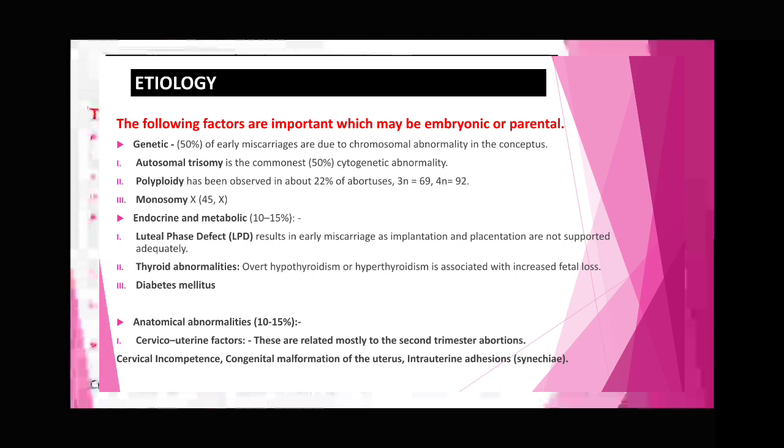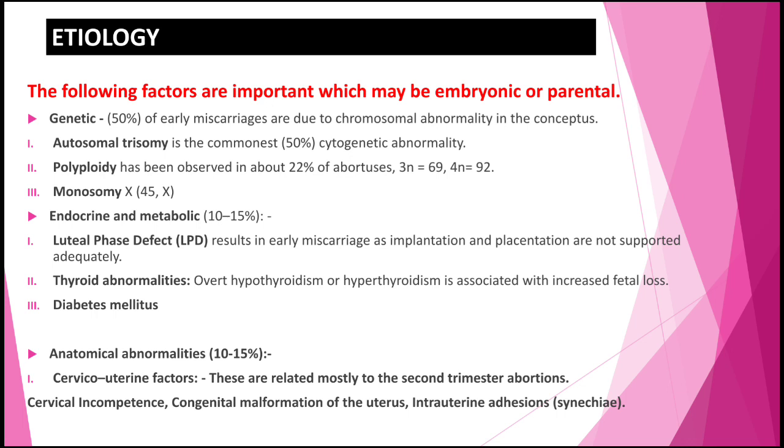Endocrine and metabolic factors account for 10 to 15 percent, due to luteal phase defect (LPD), which results in early miscarriage as implantation and placenta are not supported adequately. LPD means the luteinizing hormone responsible for ovulation is defective, leading to inadequate placental support.